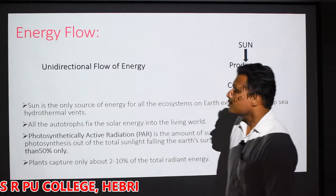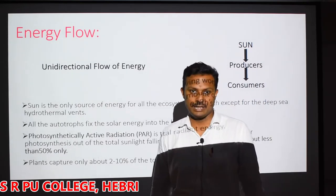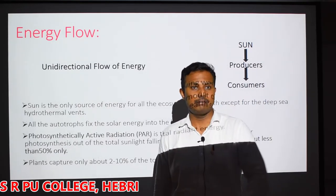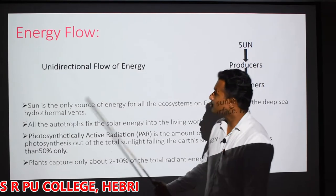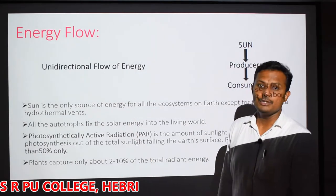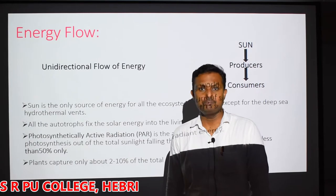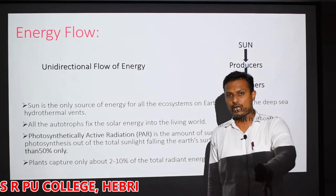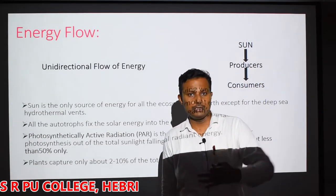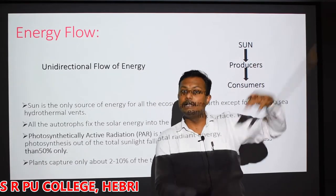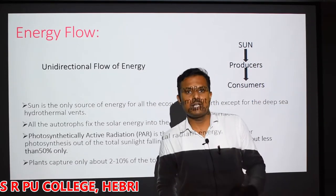Energy flow in any ecosystem - whether it is an aquatic ecosystem or a terrestrial ecosystem - will always be a unidirectional flow of energy. That means it always flows in one direction, from lower trophic level to the higher trophic level, and never comes back in the opposite direction.